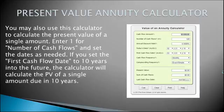If you set the first cash flow date to 10 years into the future, the calculator will calculate the PV of a single amount due in 10 years.